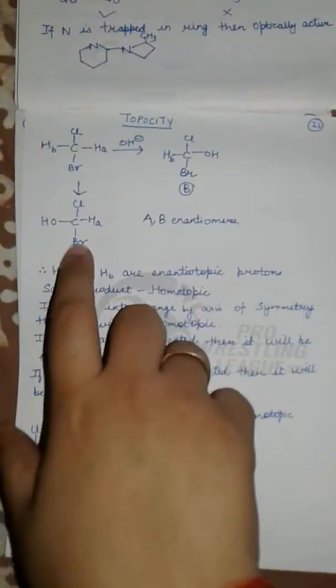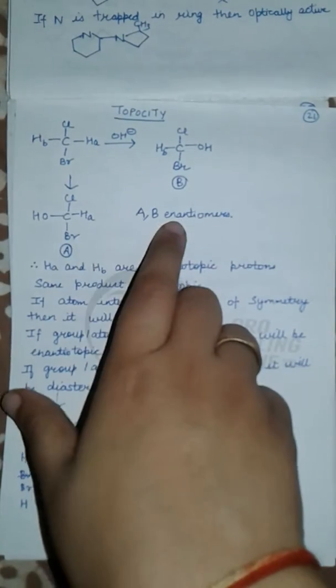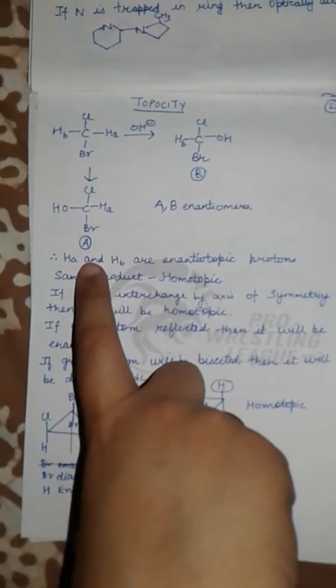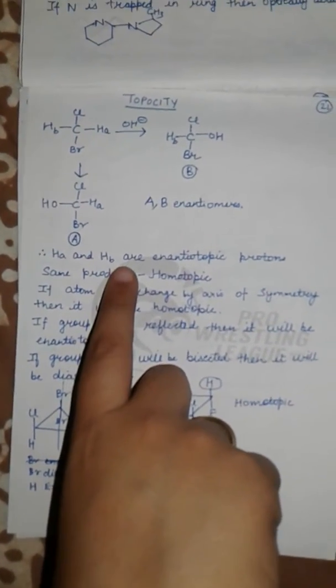Now A and B both are enantiomers, so we can say H_A and H_B are enantiotopic protons.